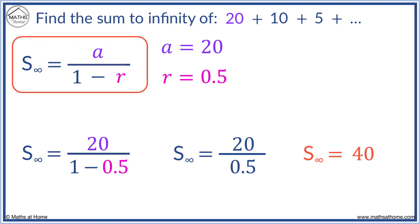This means that if we add 20, 10, 5, and all the coming terms forever, we will approach an answer of 40.